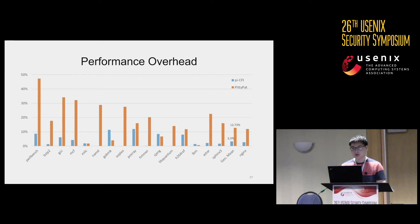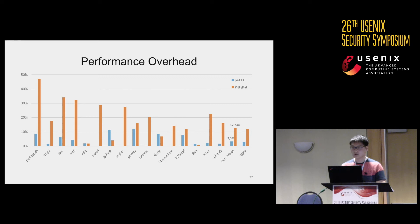The higher overhead is due to the nature of our points-to analysis. Instead of using approximate heuristics as PI-CFI does, our solution precisely reasons about all points-to relations throughout execution. That is the main reason why our overhead is bigger than expected. Performance overhead also relates to the number of child processes or threads that need to be handled throughout execution.